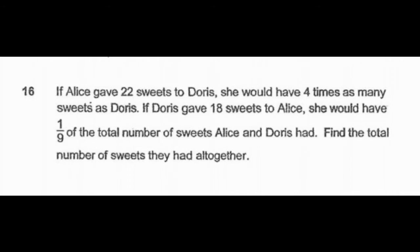What that means is Doris would have one part and Alice would have eight parts, which means Alice would have eight times as much as Doris. Find the total number of sweets they both had altogether.